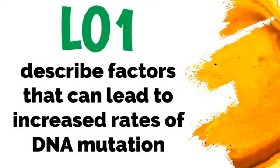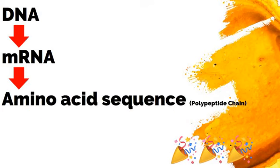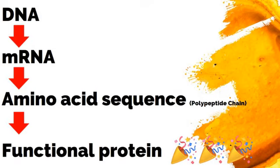So that is the factors that can lead to increased rates of DNA mutation. The next step is putting it into practice and knowing what some of these mutations are. In order to do this properly, we have to go back to DNA as your instructional template. We know the DNA is used to make a transcript of mRNA, and that mRNA will leave the nucleus and go to a ribosome and help form the amino acid sequence, also known as a polypeptide chain. And this polypeptide chain will then later fold into a functional protein.